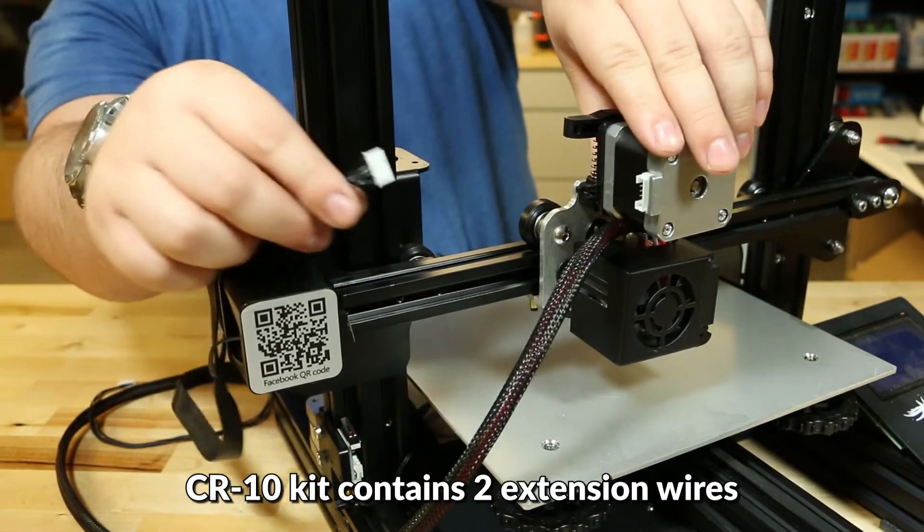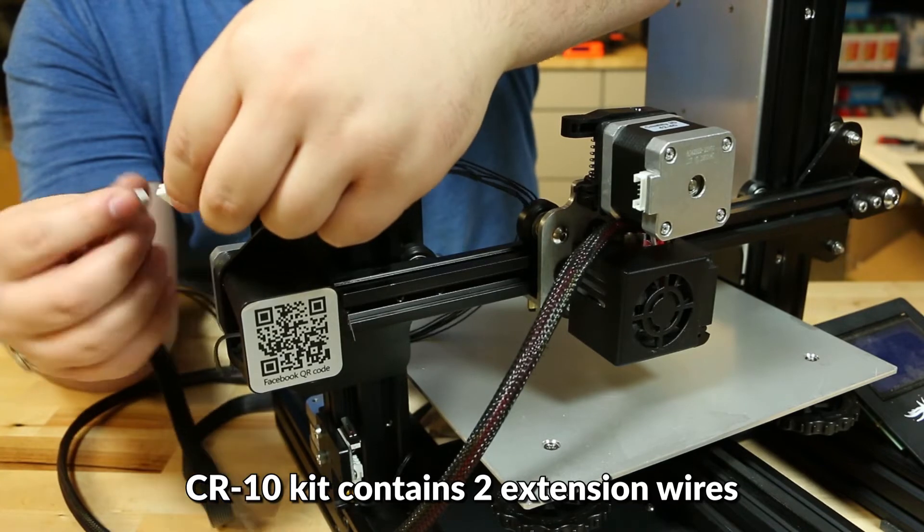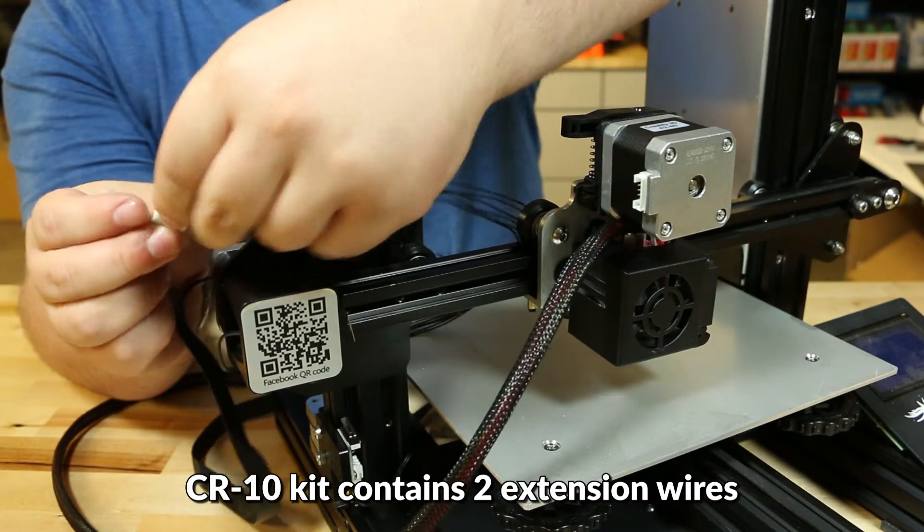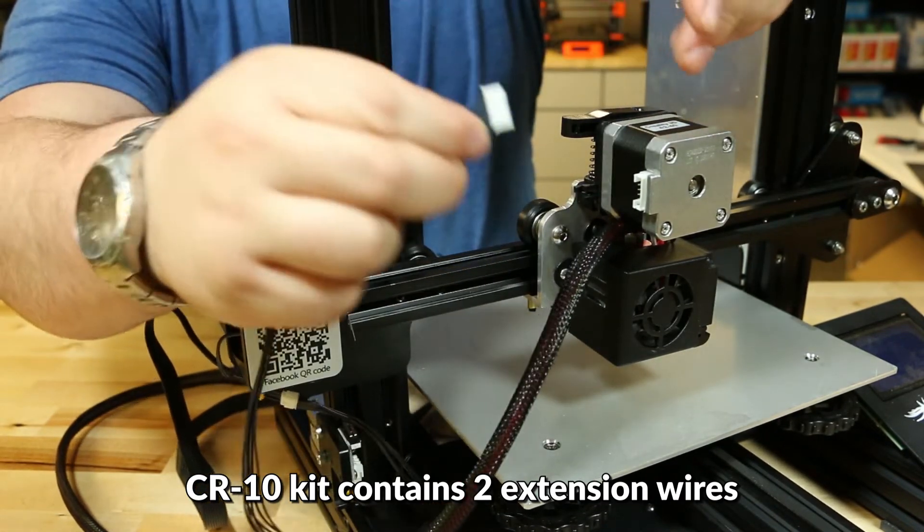Once the extruder is attached, we must attach the extruder stepper motor wire extension. With this upgrade, the stock wire can no longer reach the motor so we must use the extension wire from the kit to attach the two together. Be very careful not to break any pins when attaching the extension wire.